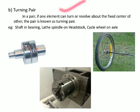A turning pair is one in which one element can only turn or revolve about the fixed center of the other element. Examples include an axle in a bearing, a shaft in a bearing, and the headstock of a lathe. Whenever one element revolves about a fixed center relative to another, that pair is called a turning pair.